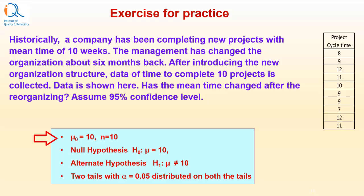Here, mu0 equals 10, N equals 10. Null hypothesis H0: mu equals 10. Alternate hypothesis H1: mu not equal to 10. Therefore, this is a 2-tailed test with alpha equal to 0.05 distributed on both tails. As the standard deviation of the population is not known, we must use student's t-test to solve this problem.